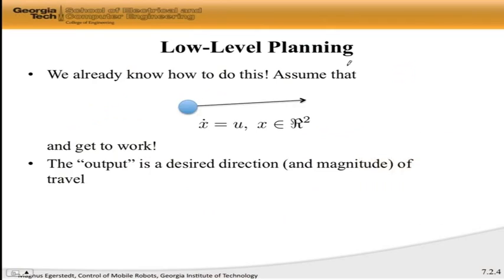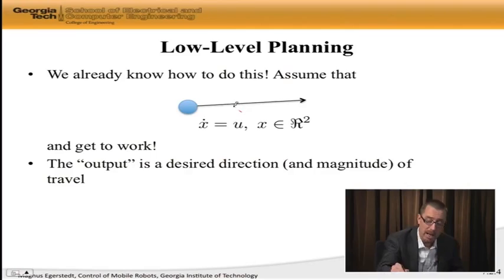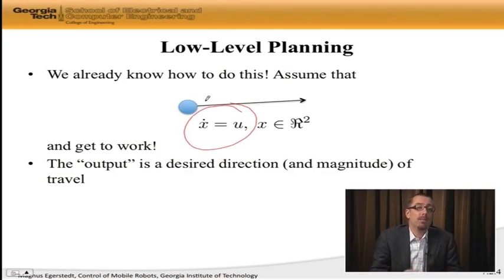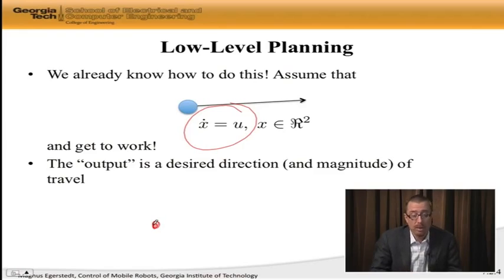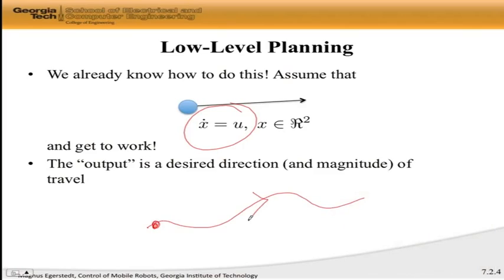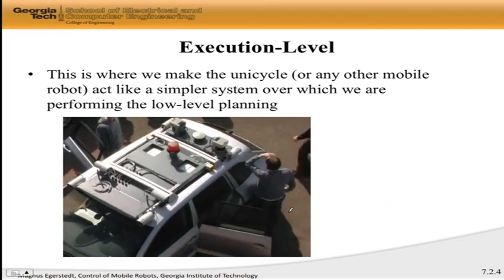At the low level, we already know how to do this. The simplest thing is to assume a very simple model — in our case, x dot is equal to u — and then we simply go to work. My x dot equal to u model is going to produce a trajectory that we would like the actual robot to follow. This trajectory becomes the low level plan that will take us to a goal point while avoiding obstacles, but it doesn't at all tell us how to achieve it, which leaves us with the execution level.